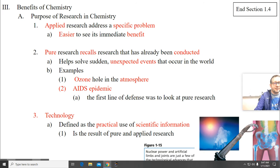And lastly, benefits of chemistry. This is what we're going to be doing all semester long. The purpose of researching chemistry, applied research addresses specific problems. It's easier to see if it's immediate benefit. Pure research recalls research that has already been conducted, helps solve sudden unexpected events that occur in the world, much like ozone holes in the atmosphere, the AIDS epidemic. First line of defense was to look at pure research. Try to get more knowledge about the virus. Technology is the practical use of scientific information. Technology is the result of pure and applied research. Without technology, our knowledge would be limited.